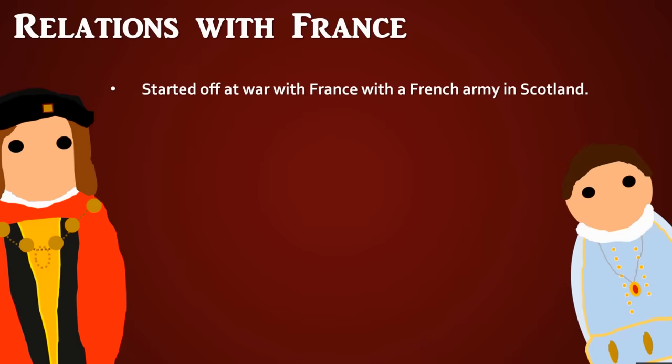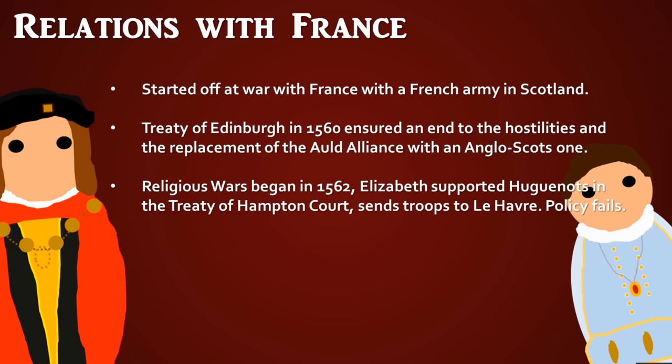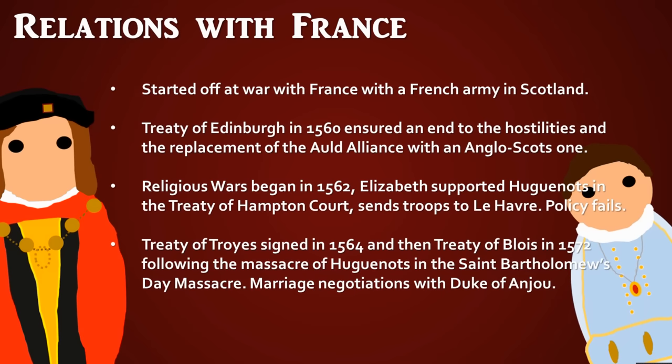Relations with France began with Elizabeth at war, due to Mary's foreign policy alliances with Spain against the French, and a large French army was stationed in Scotland — a major threat. Two years into her reign, in 1560, she and Cecil signed the Treaty of Edinburgh, ending hostilities and replacing the old Franco-Scottish alliance with an Anglo-Scottish one. In 1562, the French Wars of Religion began between Catholics and Protestants, and Elizabeth supported the Huguenots via the Treaty of Hampton Court, sending troops to Le Havre — known to the English as New Haven — but the French both sides turned on her and the policy was a disaster.